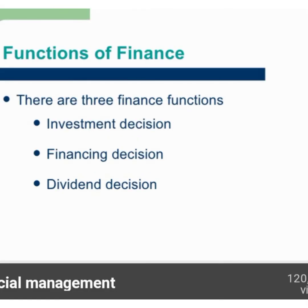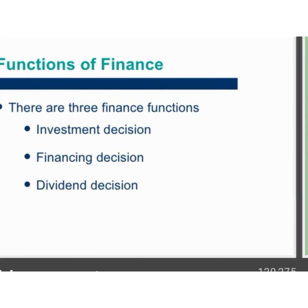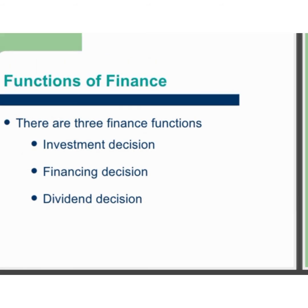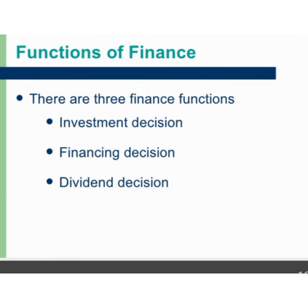The first one is investment decision or capital budgeting decisions. The investment decision involves how the firm's funds are invested in different assets so that the firm is able to earn the maximum possible return for its investors. Investment decisions can be short term or long term. A long term decision is also called capital budgeting decision.